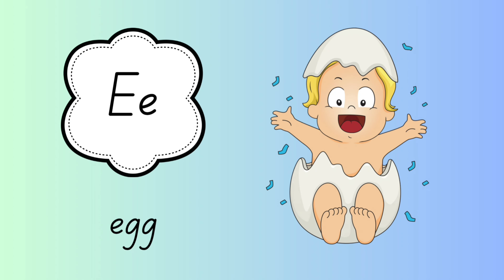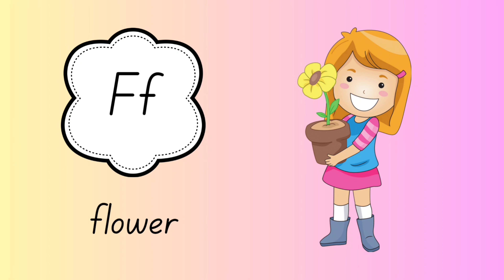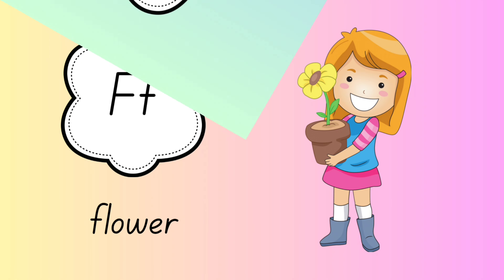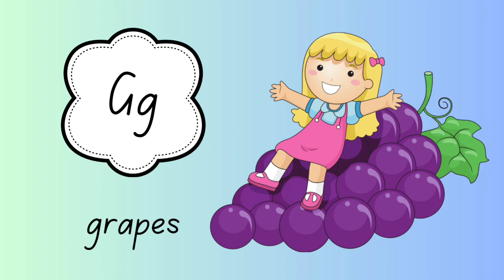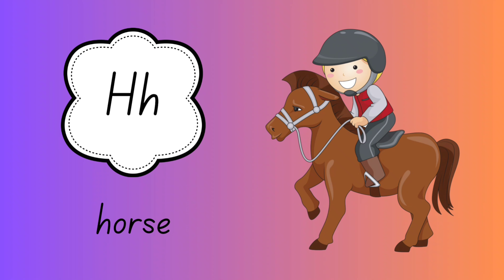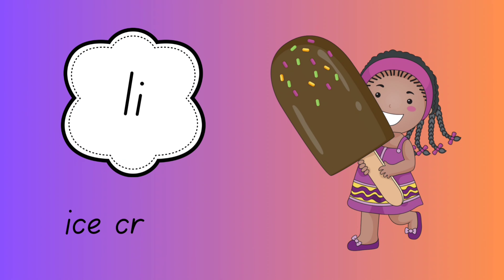E for egg. E-G-G. F for flower. F-L-O-W-E-R. Flower. G for grapes. G-R-A-P-E-S. Grapes. H for horse. H-O-R-S-E.